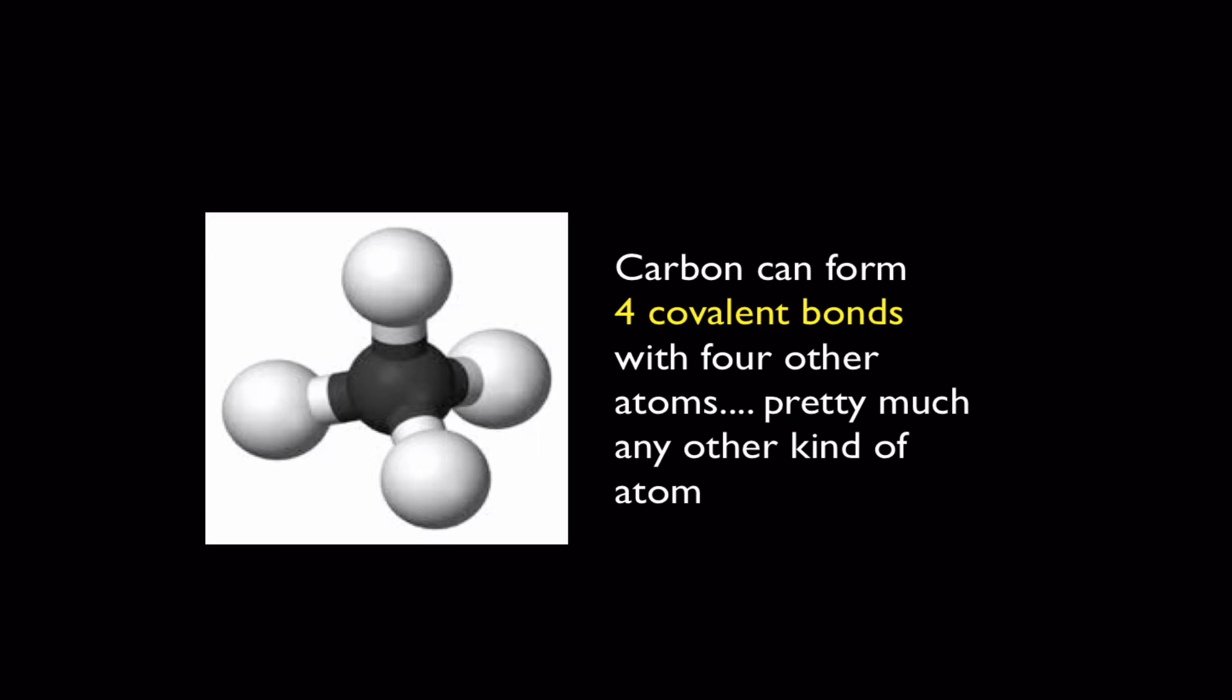Now, a carbon atom, that this black sphere represents, always is going to form four covalent bonds. One, two, three, four. These are covalent bonds, and they're not polar. They're just regular covalent bonds. And carbon always has to have four covalent bonds. This is one of the properties of carbon that makes it interesting.